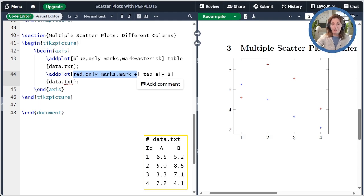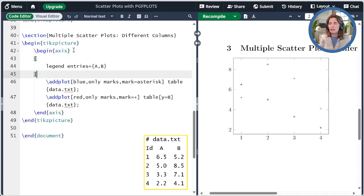We also want to add a legend so that we can remember which mark corresponds to which column. That's an axis option. The legend should be in the order that the addplot commands were added. So this first one plots column A, and the second one plots column B, and I put the legend entries in the same order.